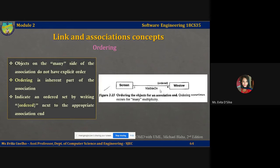If you take a look at this diagram, you have a Screen class and a Window class. A screen can have multiple windows visible on it. On the many side, if you open a screen and open multiple tabs or windows, they are listed in the order in which they were opened, and at any given time only the topmost window is visible. So on the many side of the association, you use the keyword {ordered} within flower brackets.